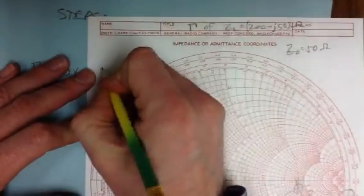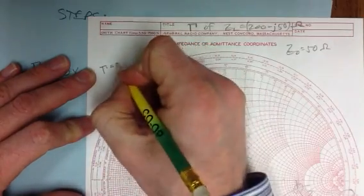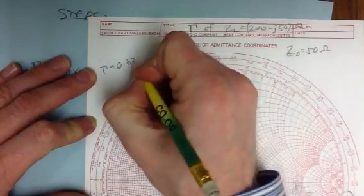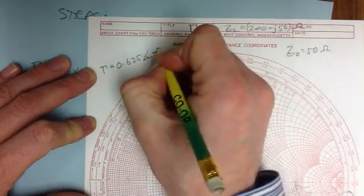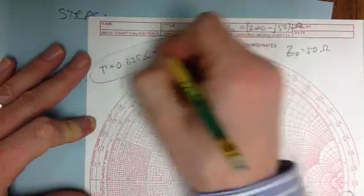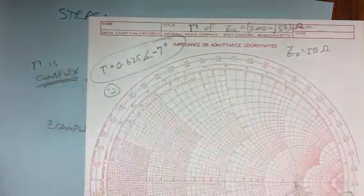So then I can say the reflection coefficient is 0.625 with an angle of minus 7 degrees. Done. That is how you do it.